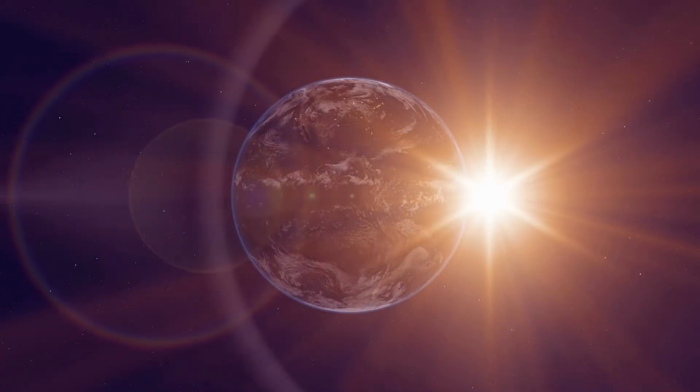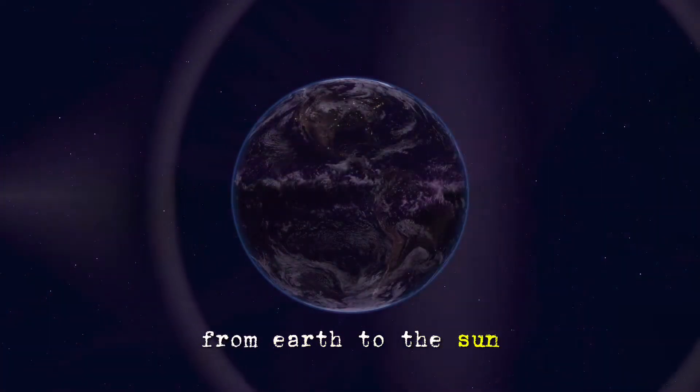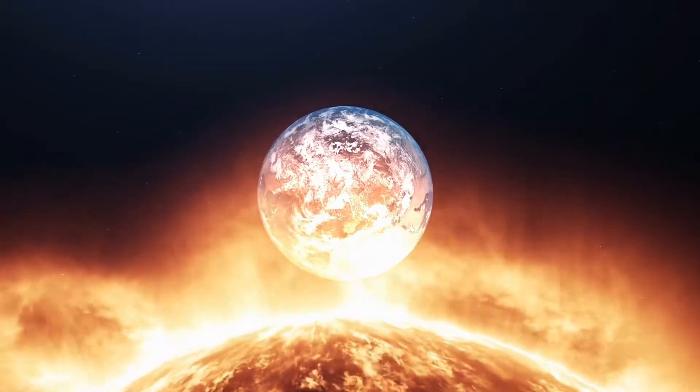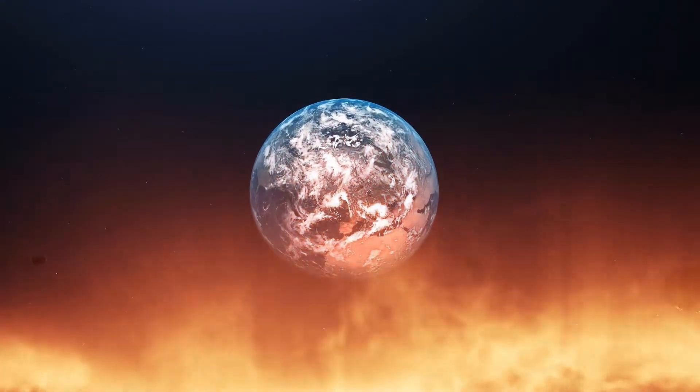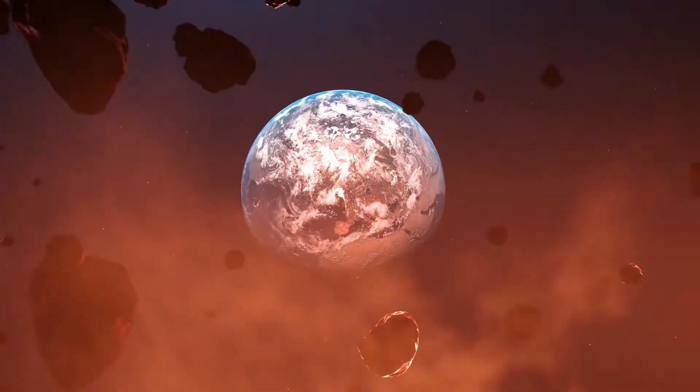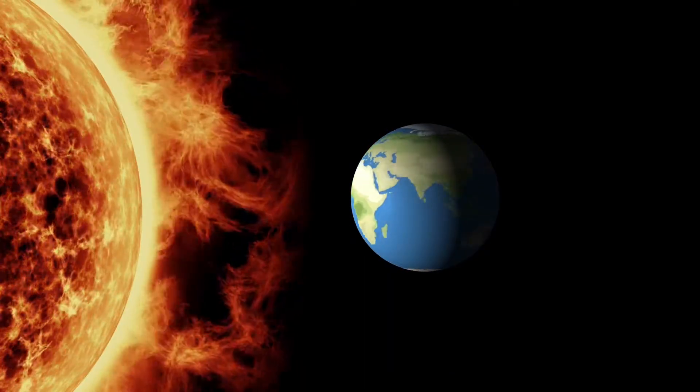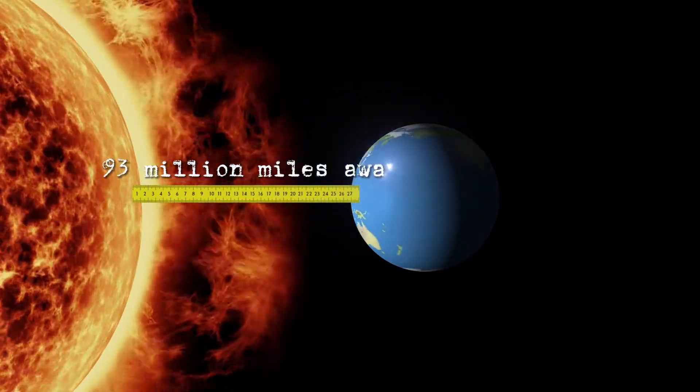Firstly, let's talk about the average distance from Earth to the sun. We say average because this distance actually changes as Earth orbits the sun due to its elliptical path. However, on average, we're about 93 million miles away.